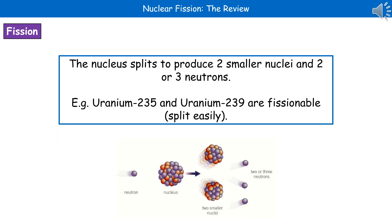So when a nucleus undergoes fission, the nucleus splits to produce two smaller nuclei and two or three neutrons. I've given you a diagram at the bottom to show you how that happens. The neutron comes in and is absorbed by our nucleus, which then triggers the nucleus to split into the two smaller nuclei, and as it does so, it releases two or three neutrons.